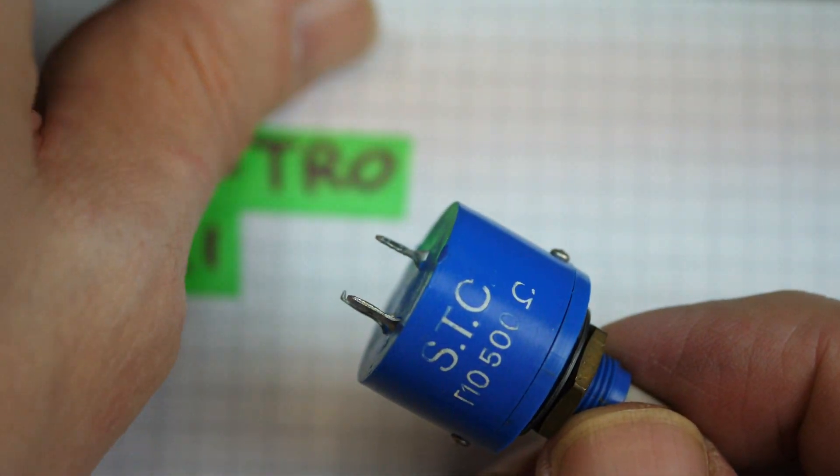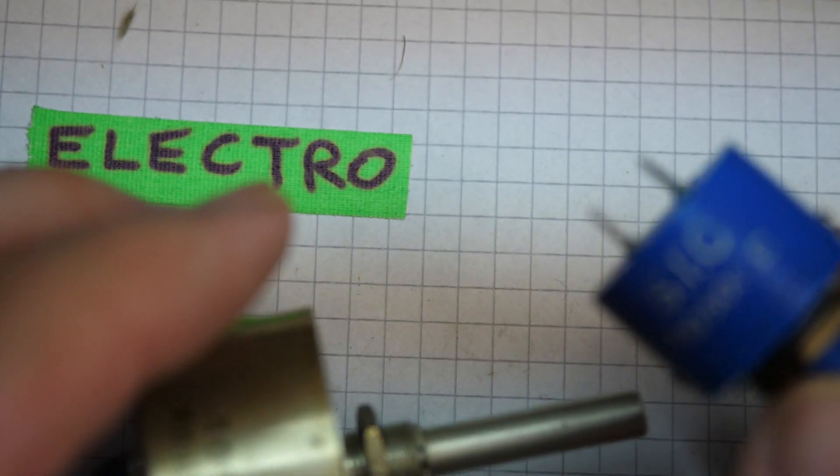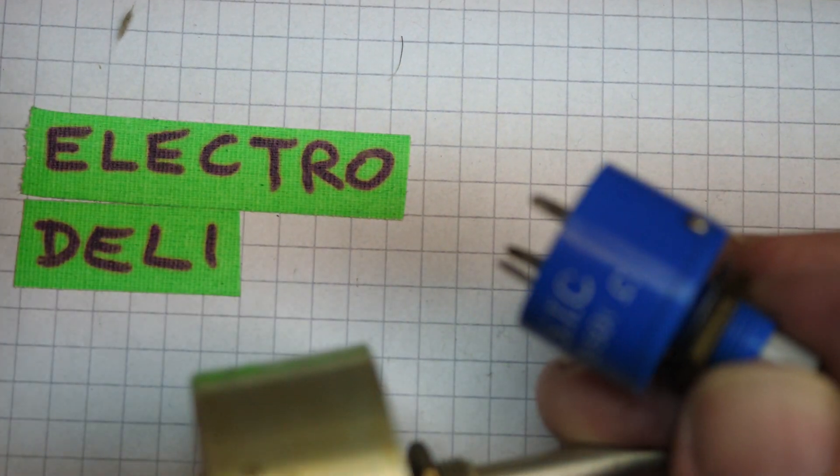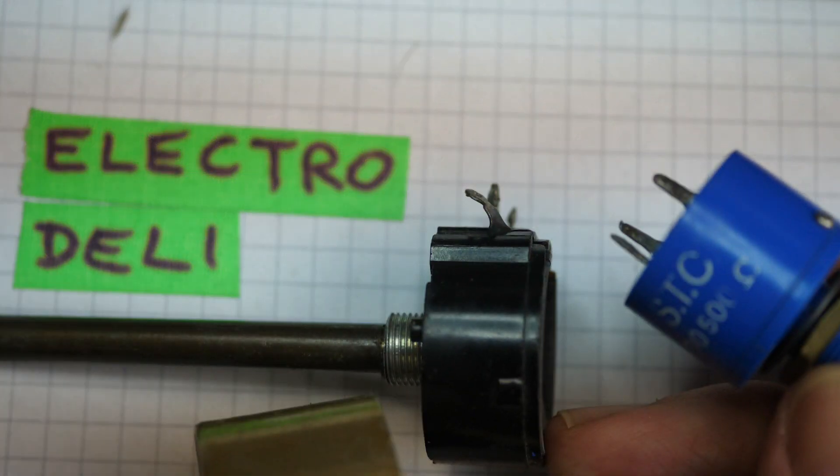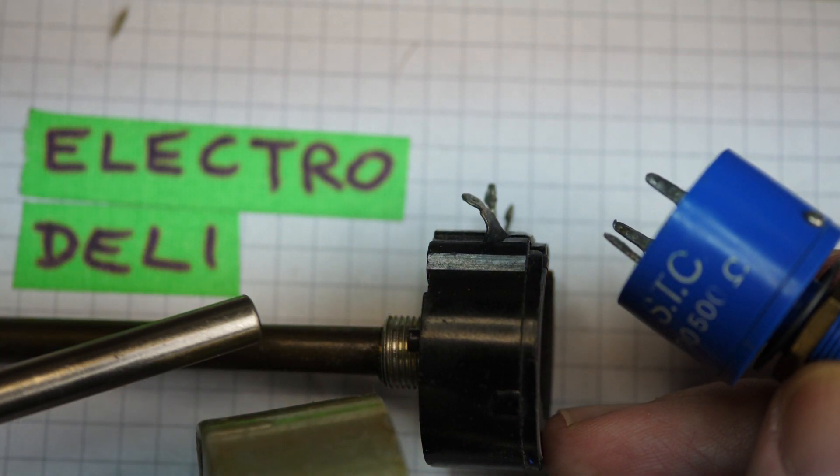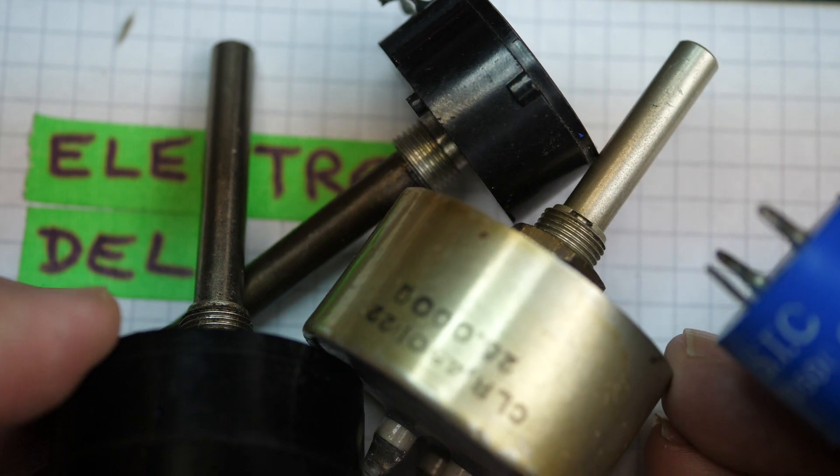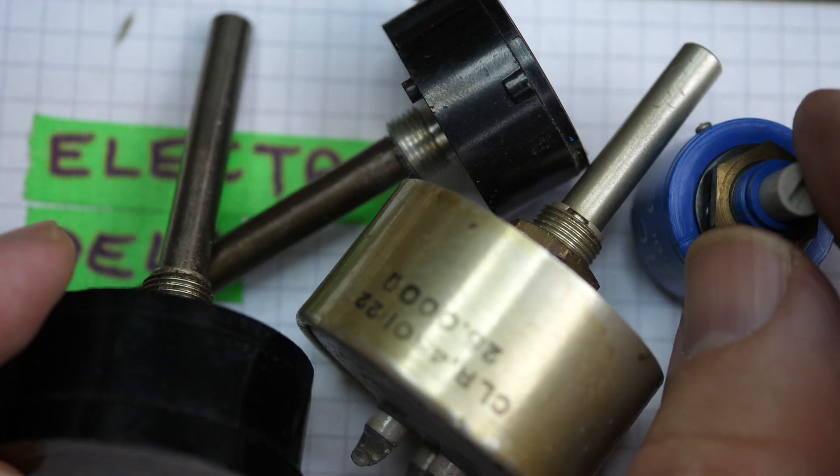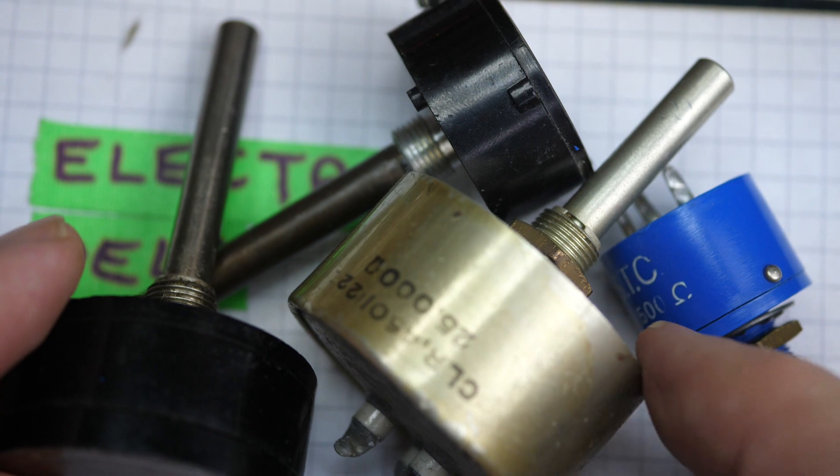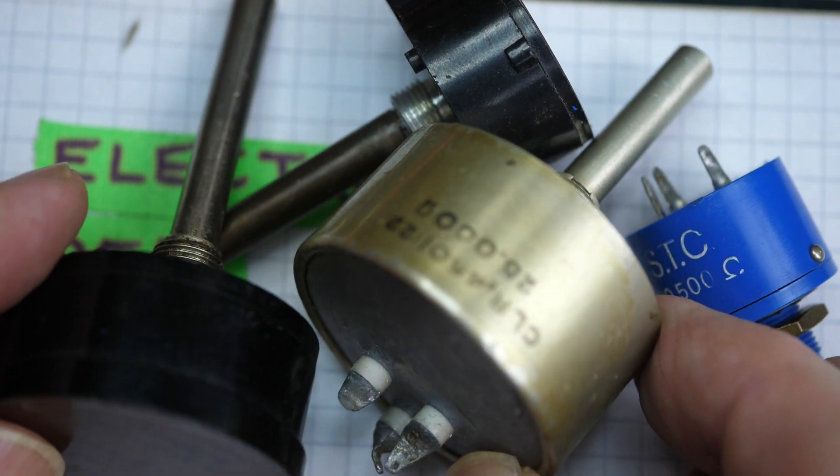So there we have it. Those are some interesting variable resistors or pots of the 1960s or 70s. Wire-wound, rather more expensive, rather more classy than your average pot, but the sort of thing that these days are very rarely seen.